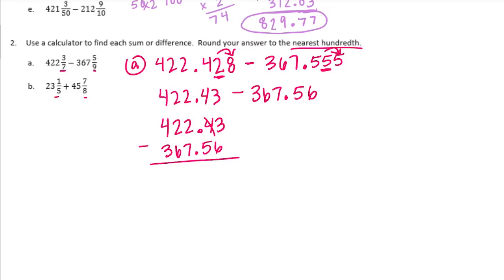We can't do 3 minus 6, so let's borrow. 13 minus 6 is 7. 3 minus 5, can't do that. 13 minus 5 is 8. Bring down the decimal point. We need to borrow again. 11 minus 7 is 4. Keep borrowing. 11 minus 6 is 5, and 3 minus 3 is 0. So we get 54 and 87 hundredths.